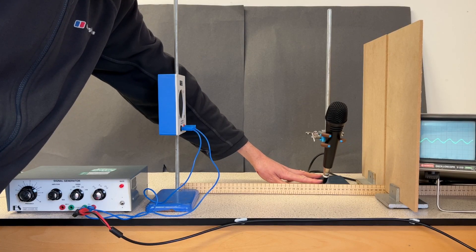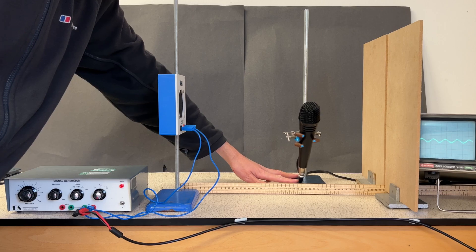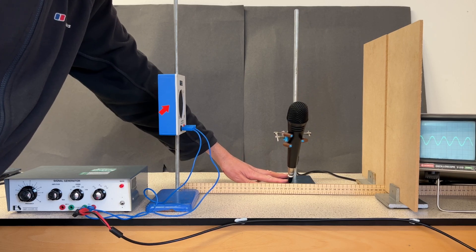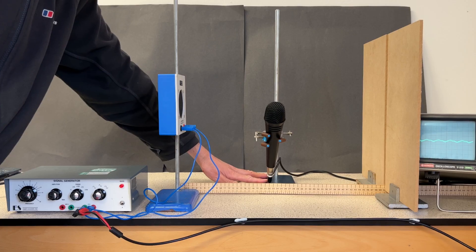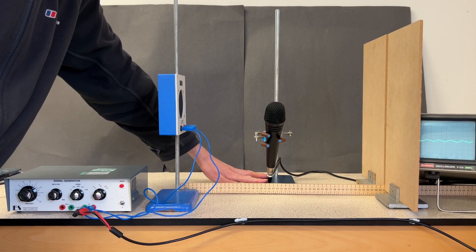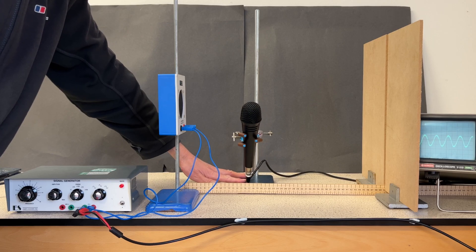This is an interesting physics demonstration showing stationary waves in sound. Sound waves are produced by the loudspeaker on the left and then are reflected by the hardboard on the right, and when the two waves travelling in opposite directions interfere, it produces a stationary wave.